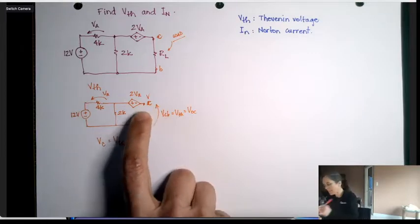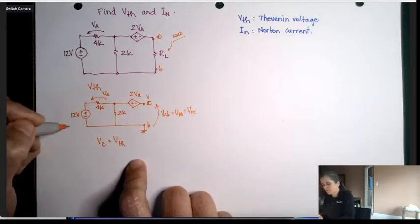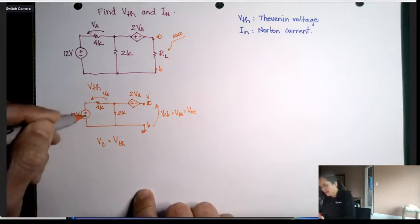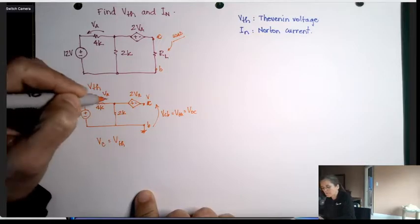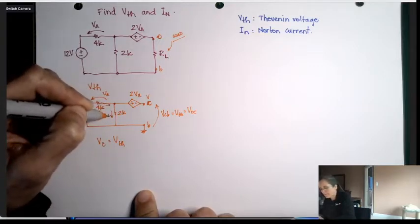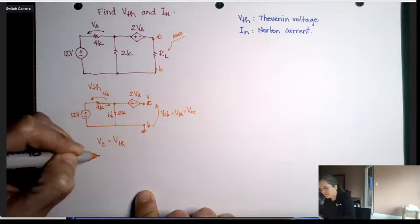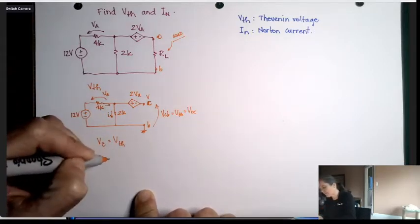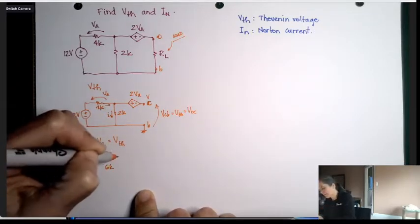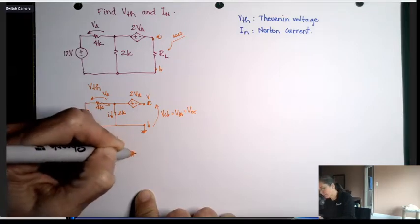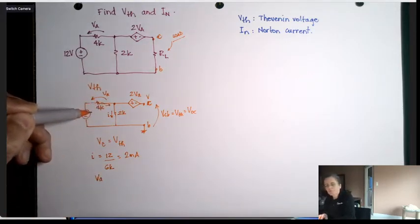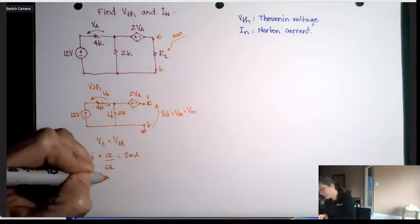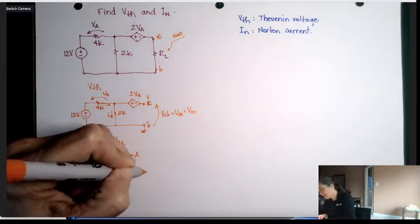Now look, there is nothing connected to this 2VA power supply, so really the circuit is just this one loop. It's minus 12, 4k, and 2k. So the current here, there is only one current in the circuit, and that current is going to be 12 divided by 6k, which is 2 milliamps.